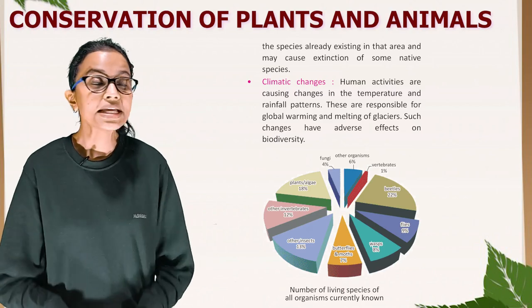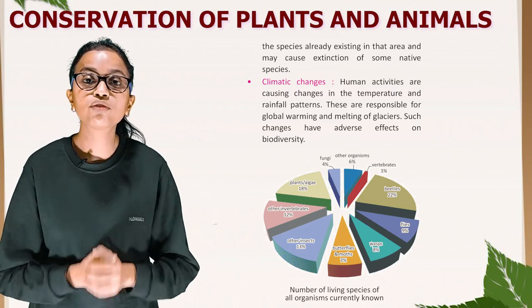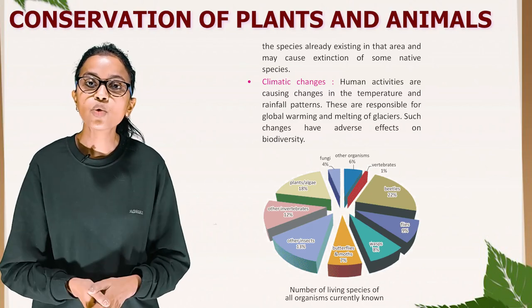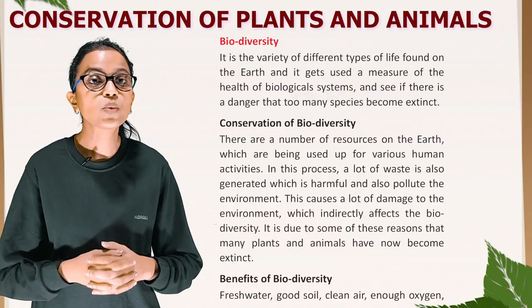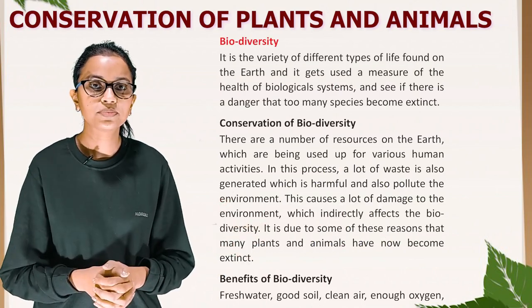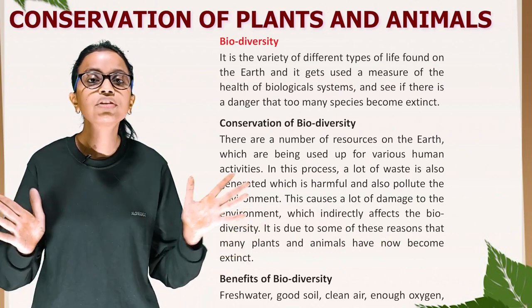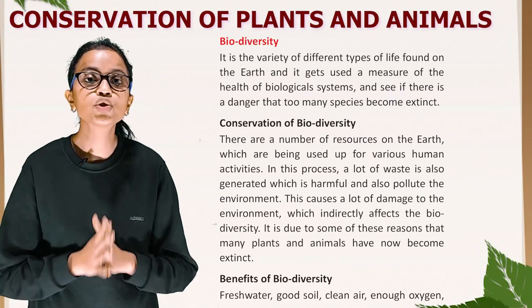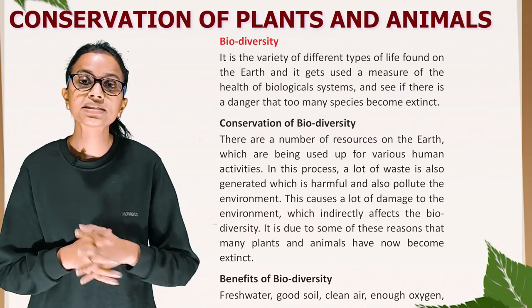So students, this is the diagram showing the number of living species of all organisms currently known — go through it. Biodiversity: it is a variety of different types of life found on the earth, and it is used as a measure of the health of biological systems. There is a danger when too many species become extinct.